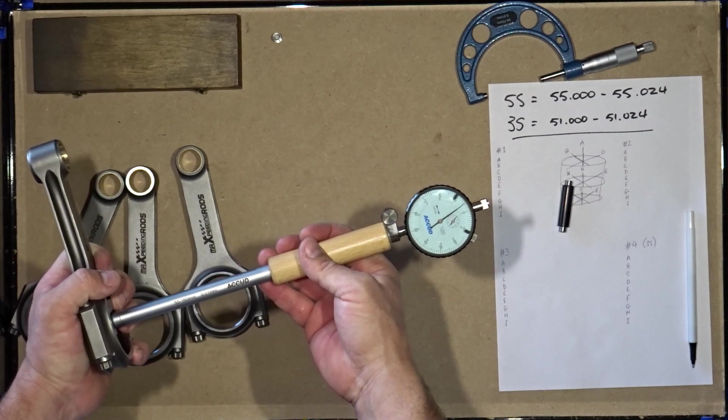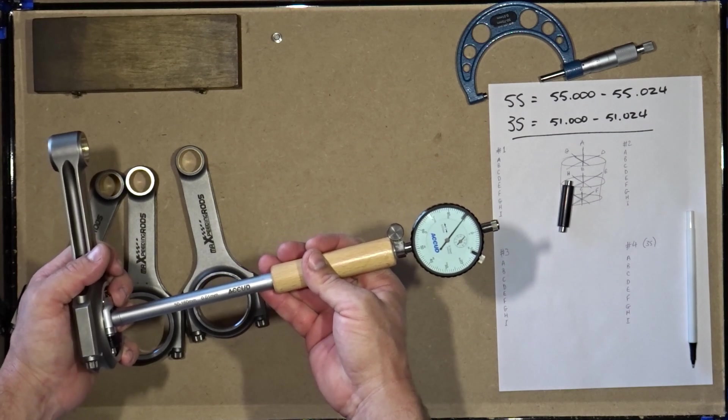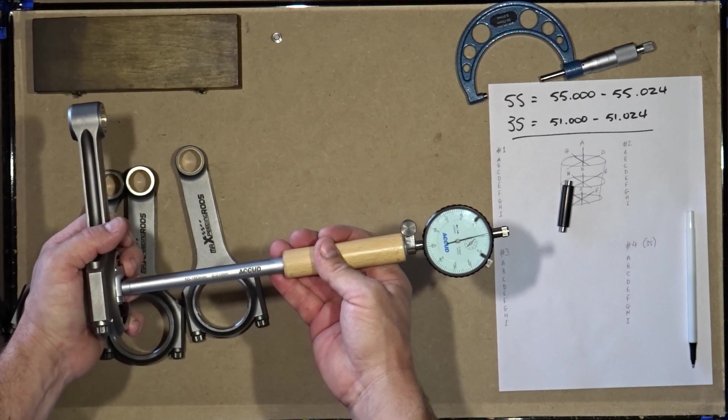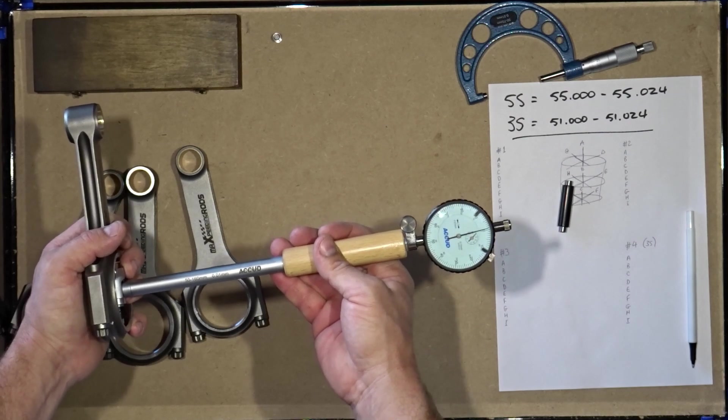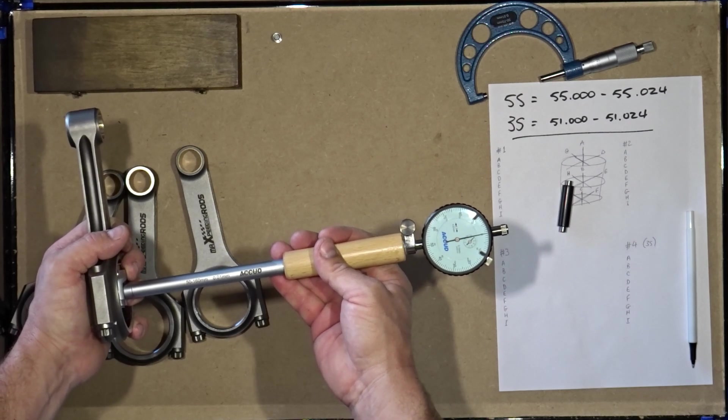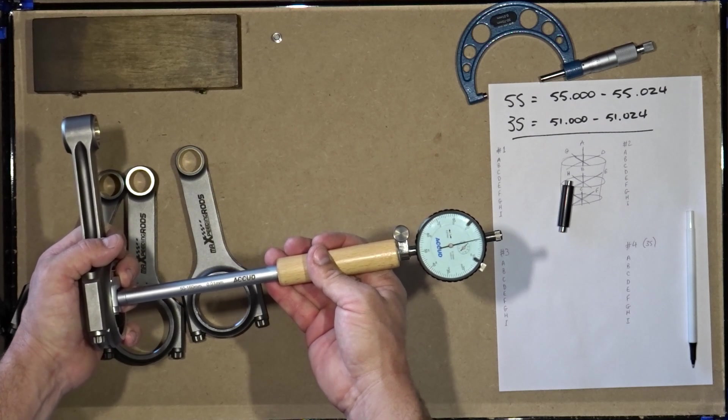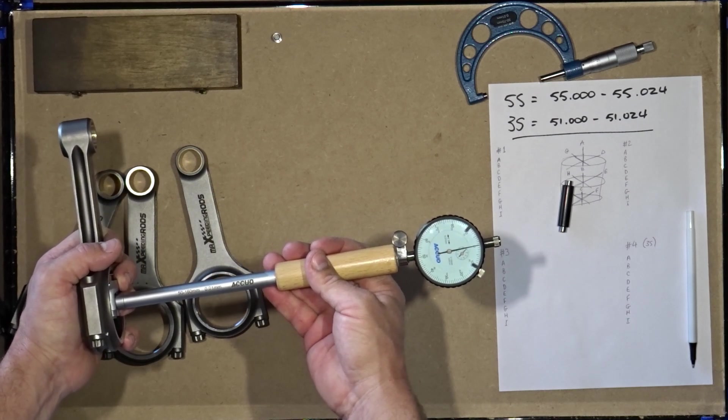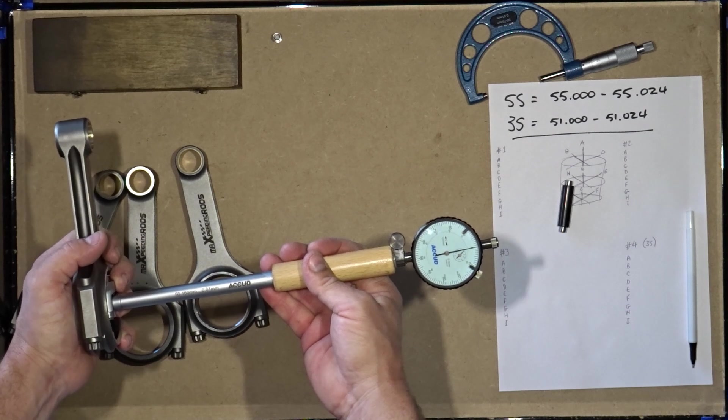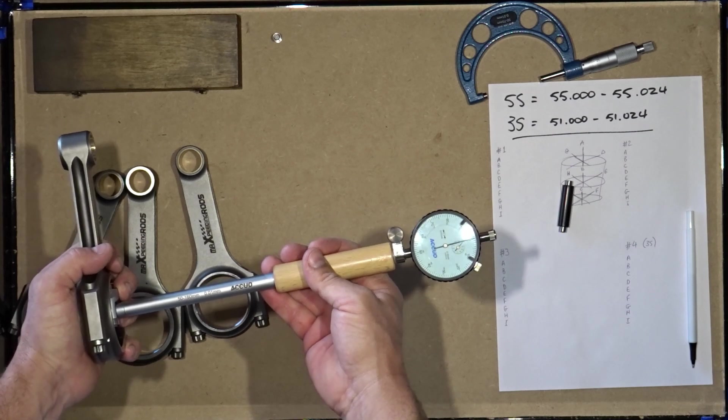You can see the bore size tolerance at the top of my high-tech data recording device. But a tolerance for out of round, taper, bell mouthing, barreling or waviness is nowhere to be seen. And there's a reason for that. There's zero tolerance for that kind of nonsense.